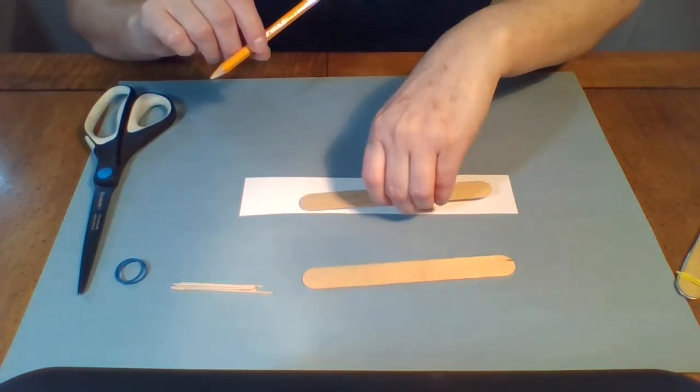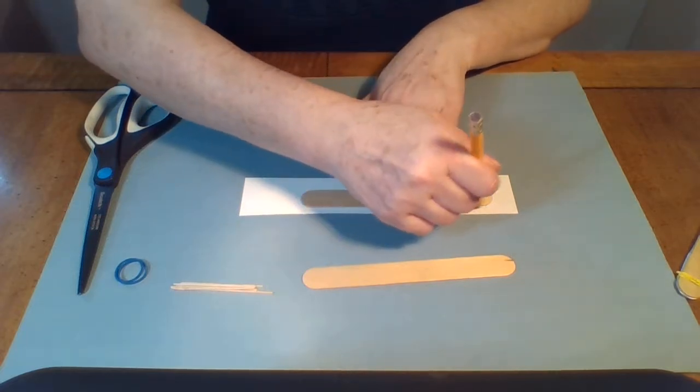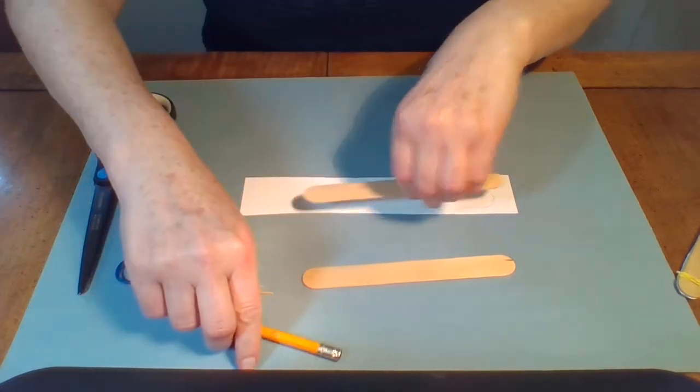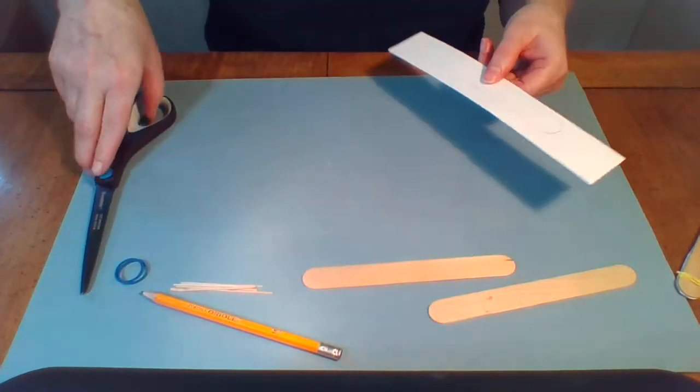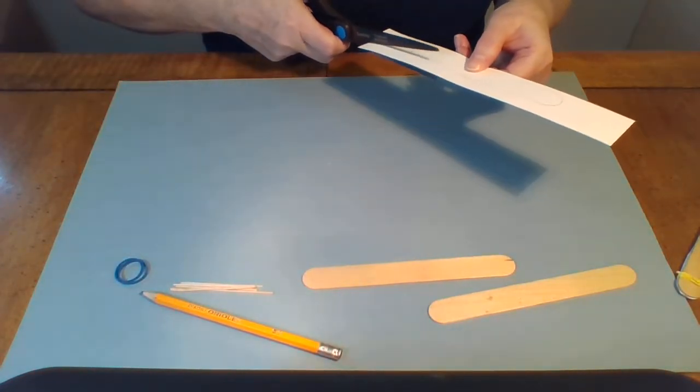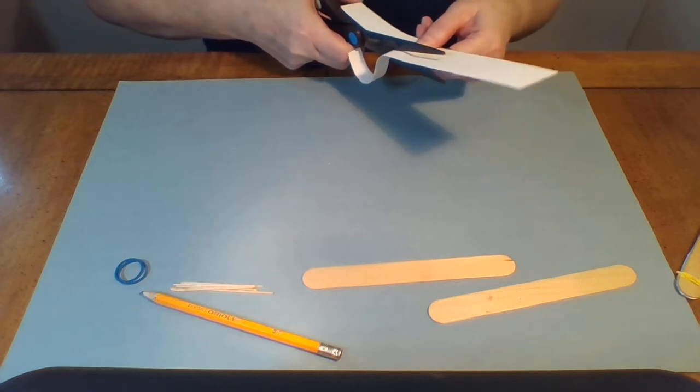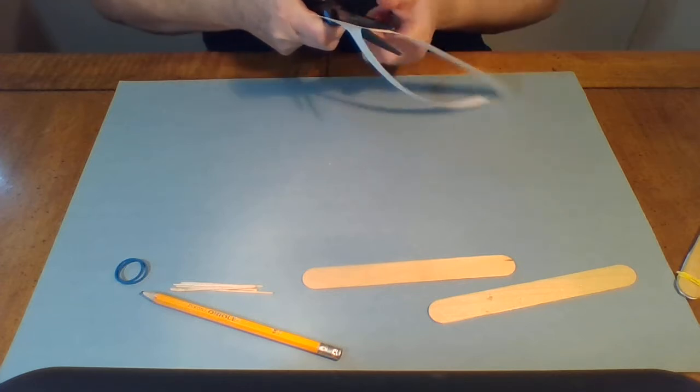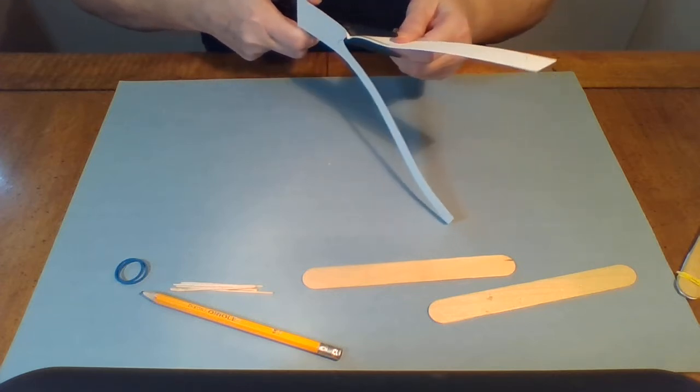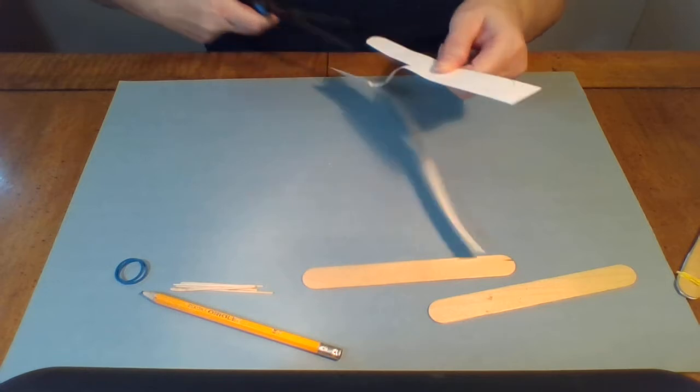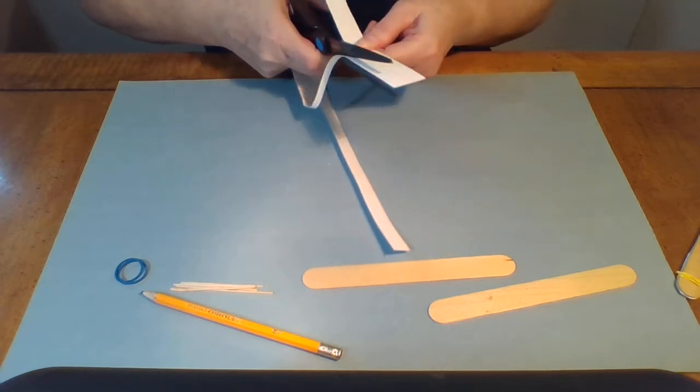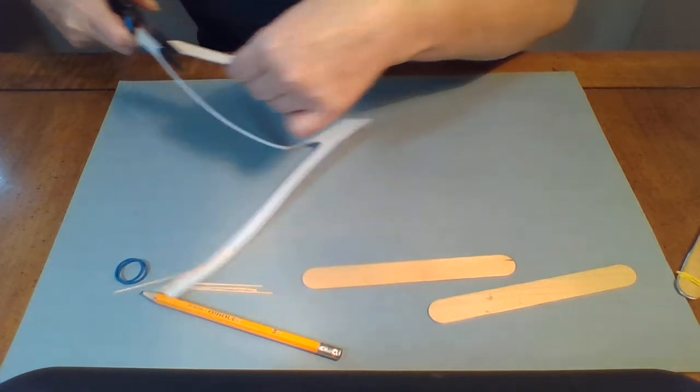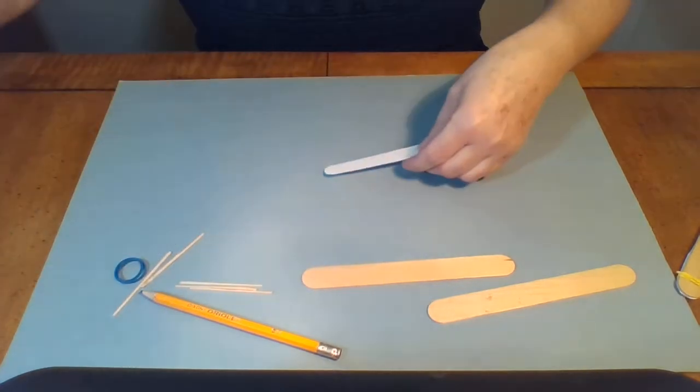Your first step is to trace around the popsicle stick. It doesn't have to be exact, but you want it about the same size and then cut it out. I'm using a piece of cardstock, but you can use any type of paper. I'll show you after we're done. I made a harmonica with cardstock already and I made one with newspaper just to see the difference in tone. You can use pretty much any type of paper except maybe tissue paper. I haven't tried that one.